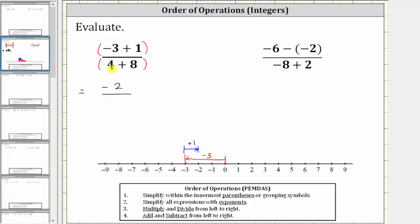In the denominator, we have four plus eight, which is 12, which gives us negative two twelfths, but this does simplify because two and 12 share a common factor of two.